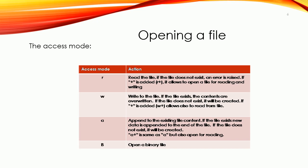'a' appends to the existing file content. If the file exists, the new values will be added to the end of your file. However, if it does not exist, Python will create the file for you. 'a+' is used for appending and reading at the same time. The last access mode is 'b' to open a binary file. The default access mode is 'r'.